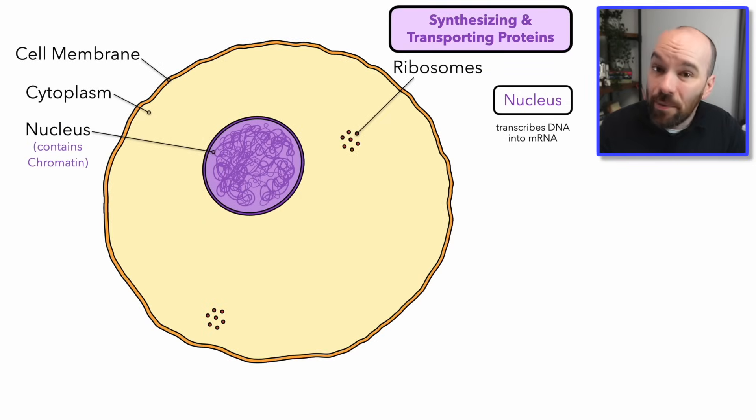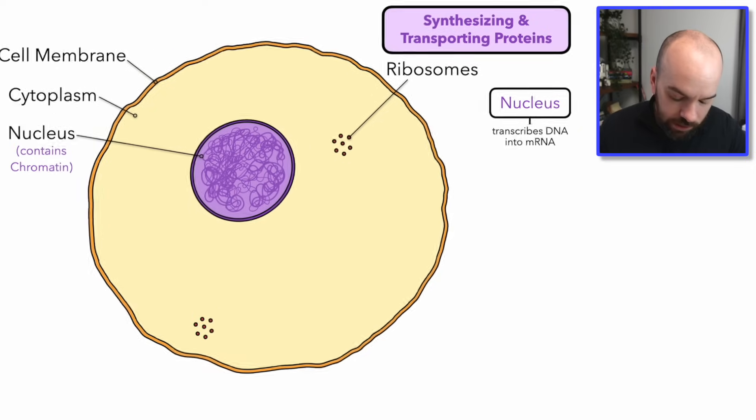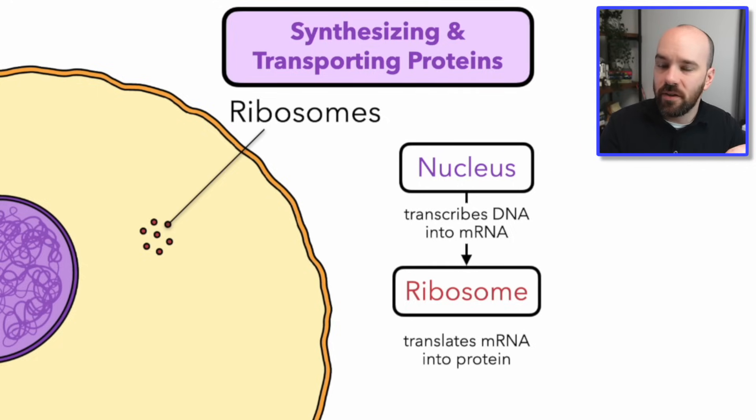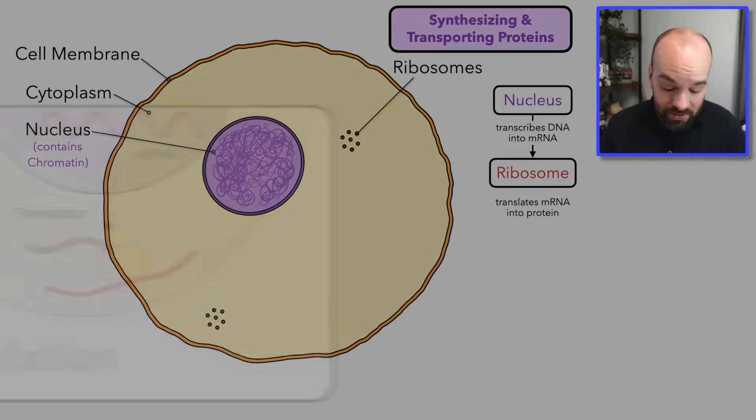Next, we have something called a ribosome. Ribosomes are super small and they're spread throughout the cell. What's going to happen is that mRNA is going to travel to the ribosome, and the ribosome is going to read the mRNA instructions and use those instructions to build a protein. Here's my favorite metaphor for this — it's building Legos. In this metaphor, the mRNA is my instruction booklet telling me what to do. I'm the ribosome because I'm building the protein, which is the finished Lego structure, and each Lego brick is an amino acid. When you combine the amino acids together in the right way, they form a whole protein.